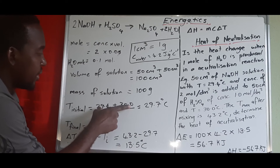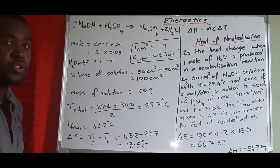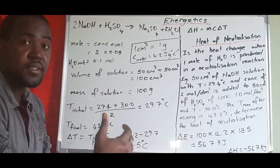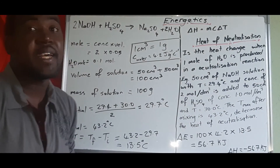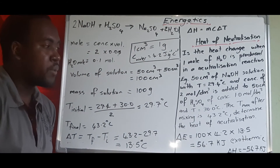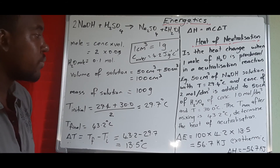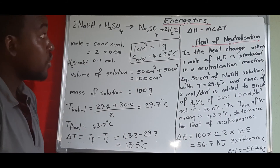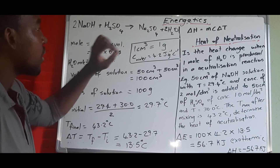The reason it is negative 56.7 kJ is because the temperature increased from 29.7°C to 43.2°C, meaning the reactants lost heat to the environment — the solution temperature increased. The negative sign tells us this reaction is exothermic. Conversely, if ΔH is positive, the reaction is endothermic and the final temperature would be less than the initial temperature. This same process applies to calculating the heat of neutralization for any question.